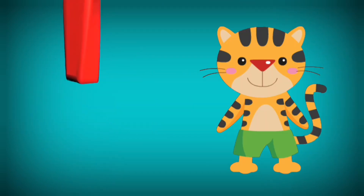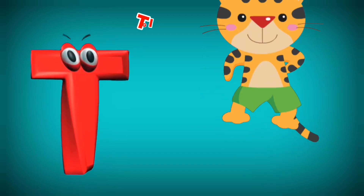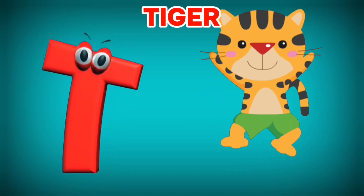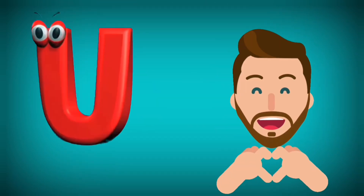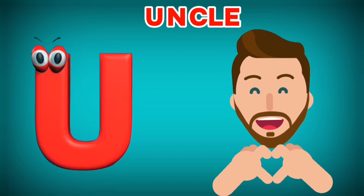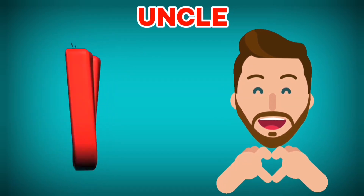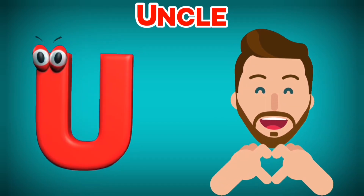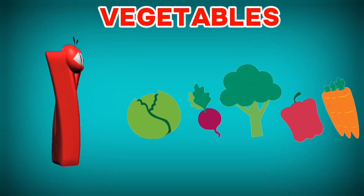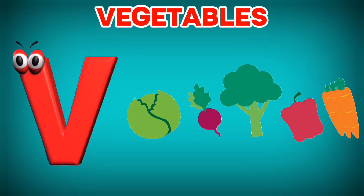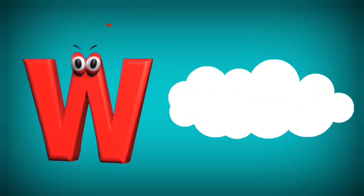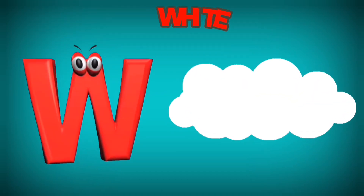T is for Tiger. T, T. Tiger. U is for Uncle. U, U. Uncle. V is for Vegetables. V, V. Vegetables.